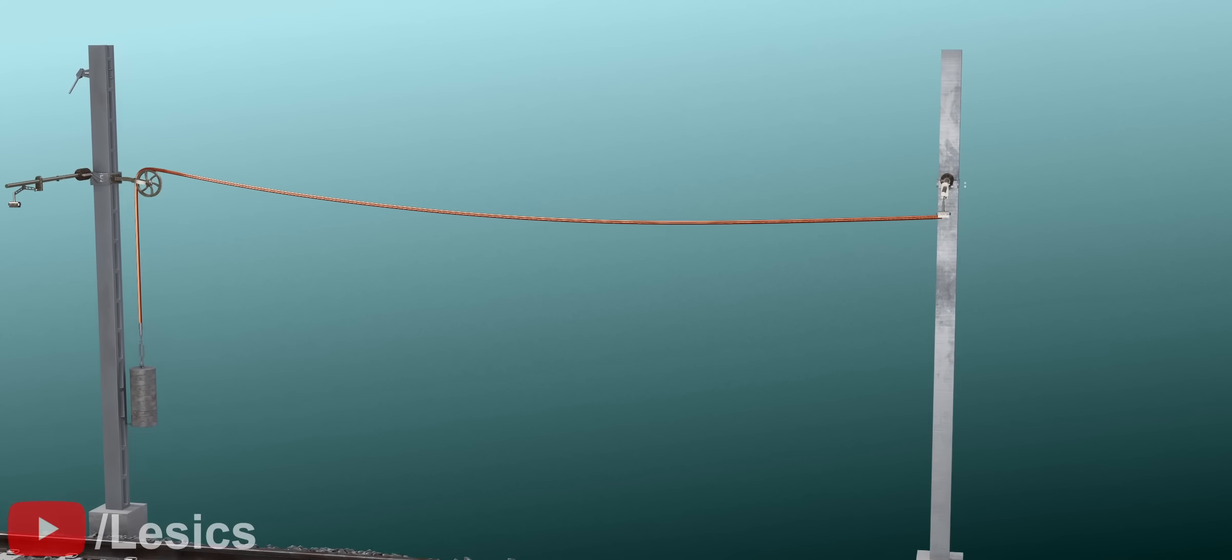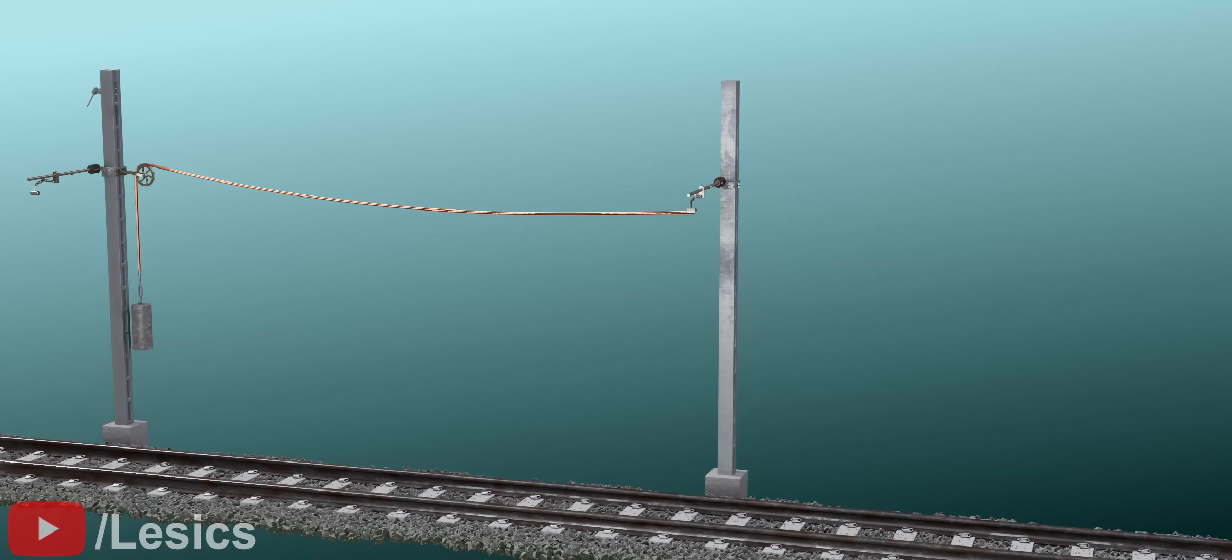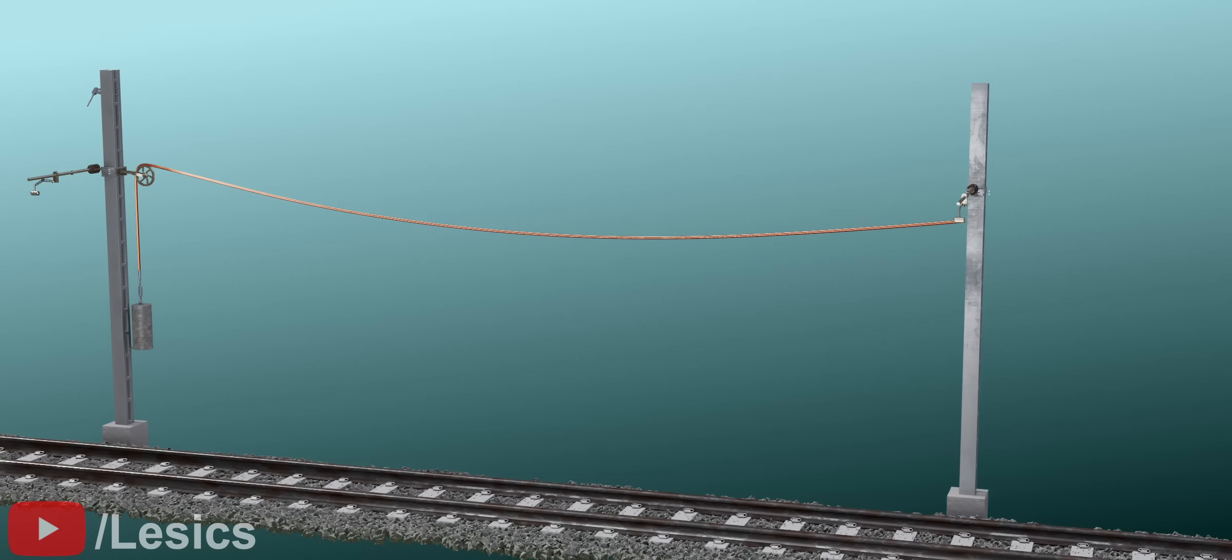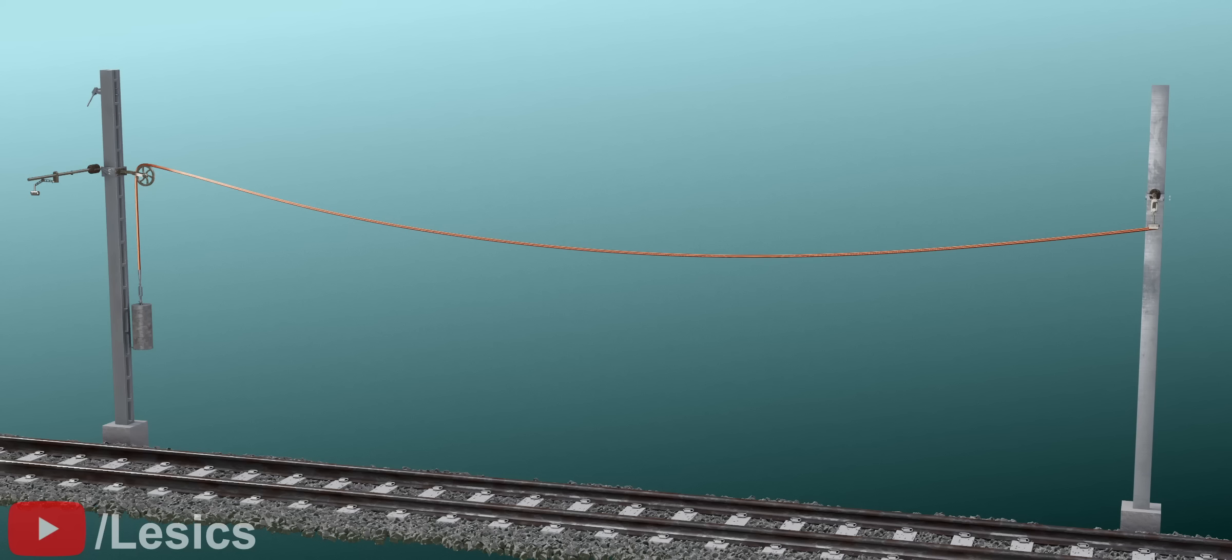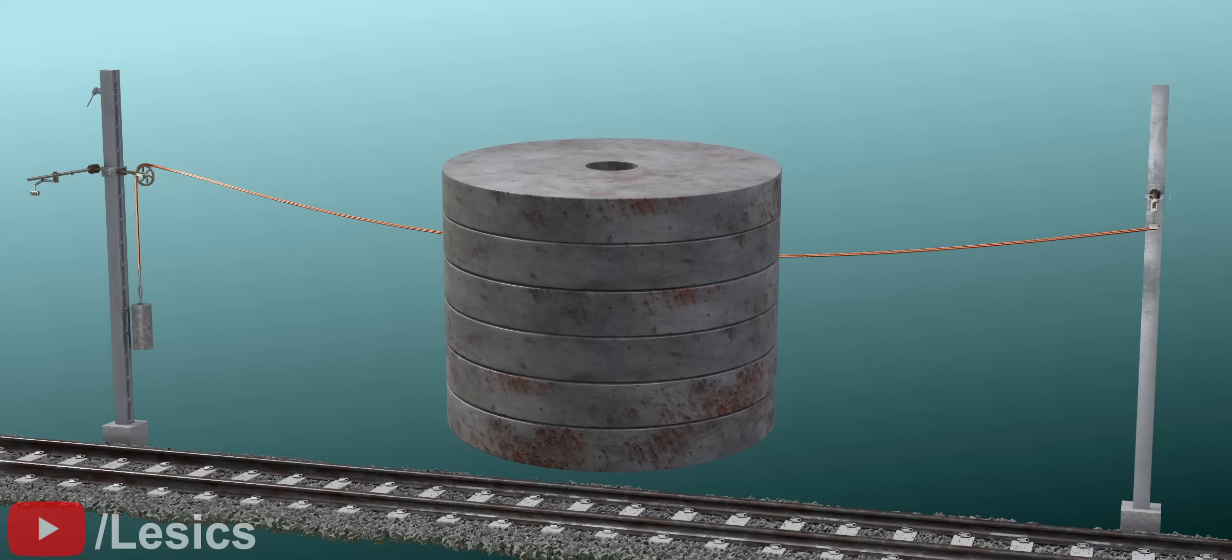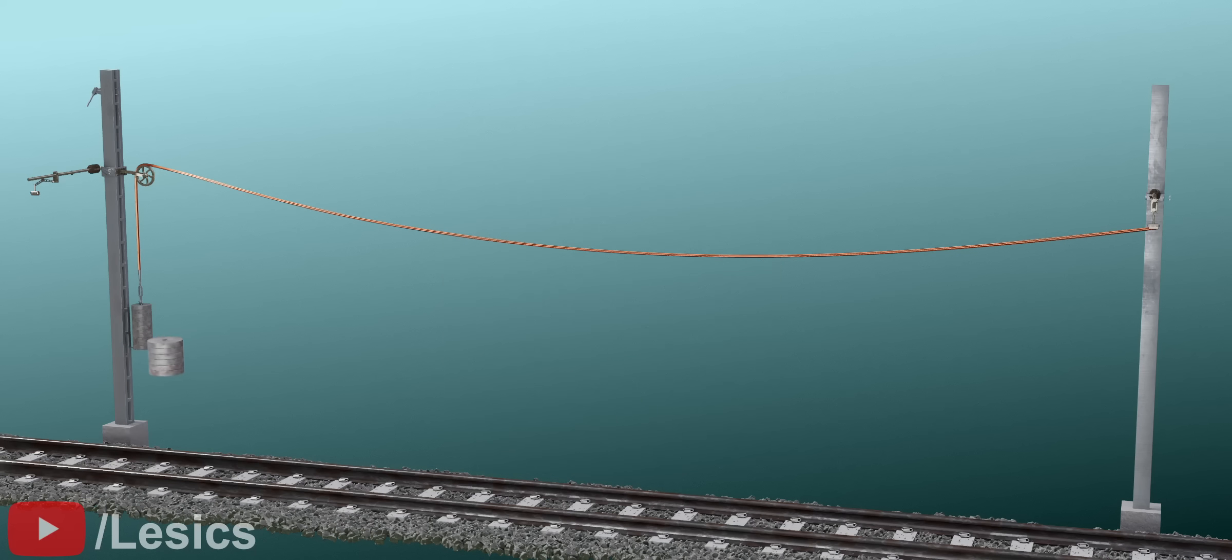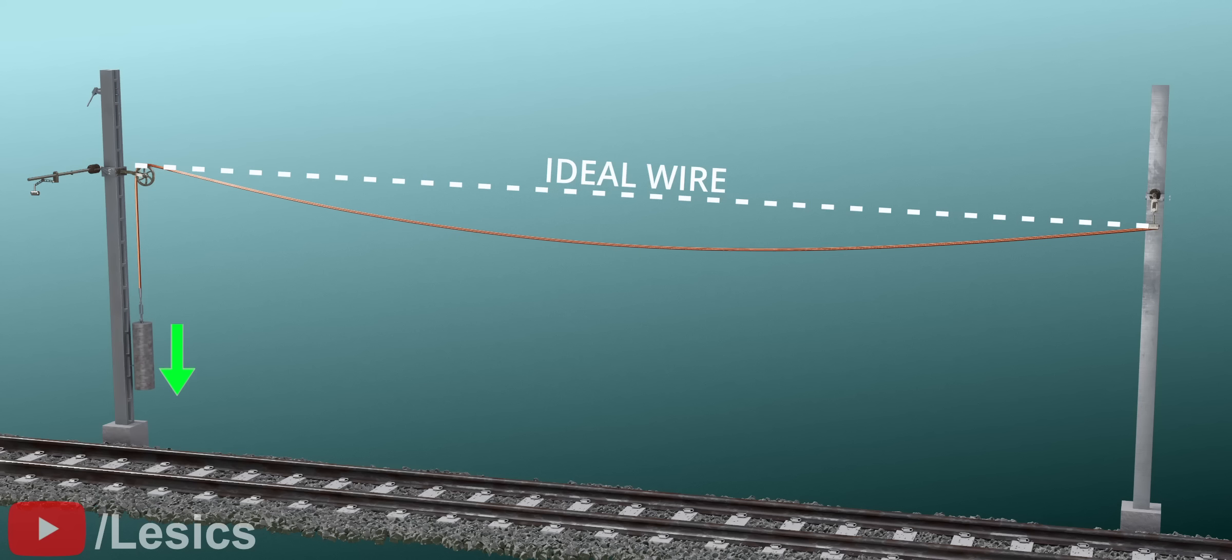With this pulley and weight arrangement, can we increase the distance between the poles to any extent? The answer is no. Although the concrete weights reduce the sag of the wire, they can never completely eliminate the sag. Especially when the span is too large, even with a good amount of disc weight, the sag will be considerable.